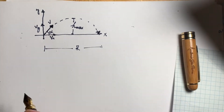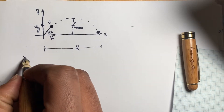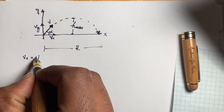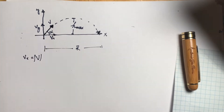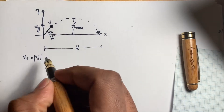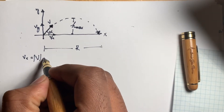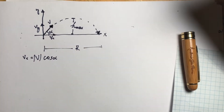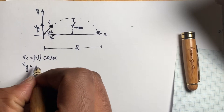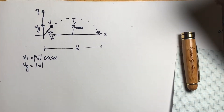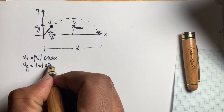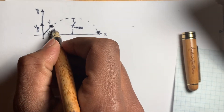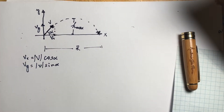We can do this. V along dx is the magnitude of V, which is a vector, times cosine of alpha. V along y is the magnitude of V times sine of alpha — that's the opposite sine component.